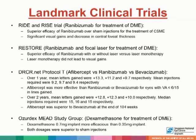In the DRCR.net Protocol T, which compared aflibercept versus ranibizumab versus bevacizumab: over one year, there was a mean letter gain of 13.3 versus 11.2 and 9.7 letters respectively, with mean injections of about 9 to 10 each. Aflibercept was more effective than ranibizumab or bevacizumab for eyes with visual acuity worse than or equal to 6/18. Over two years, mean letter gains were 12.8, 12.3, and 10 respectively, with median injections of 15 to 16. Aflibercept was shown to be superior to bevacizumab at the end of 104 weeks. Ozurdex was also studied and showed that the dexamethasone 0.7 mg implant was more efficacious than the 0.35 mg implant, and both dosages were superior to sham injections.